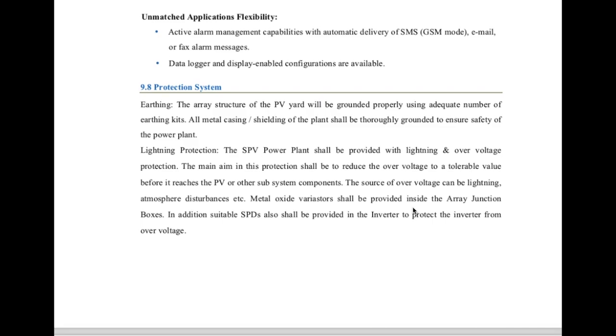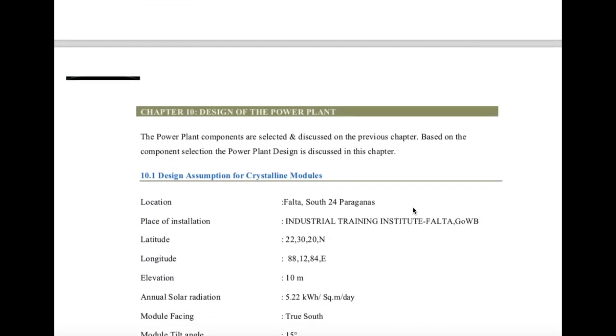The protection device is basically earthing and lightning protection. If you want, you can give the earthing diagram attached to it for a more detailed project report. In summary, the design assumptions are: the location, latitude, longitude, elevation, annual solar radiation, module facing direction, module tilt angle. If you want, you can give what the sunshine hours are, whether there is shading — if yes, you can do the SketchUp shadow analysis and put it in this report, along with all the different losses.